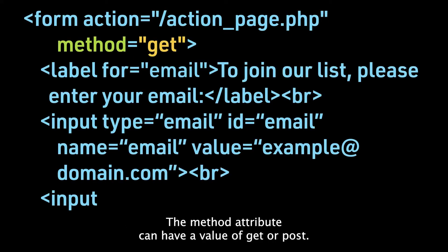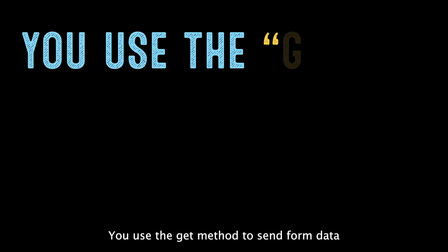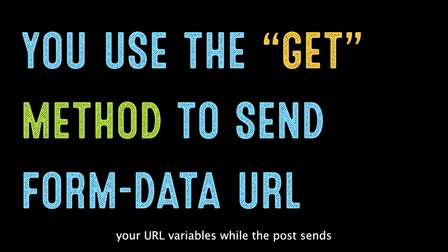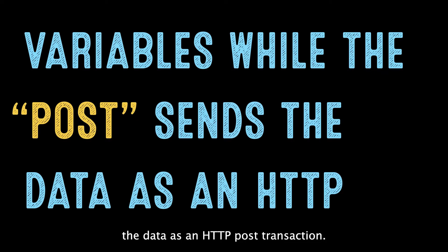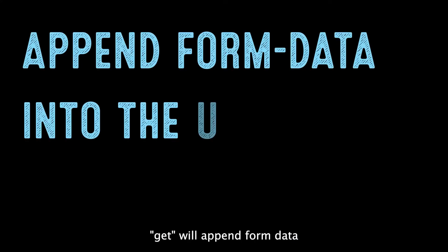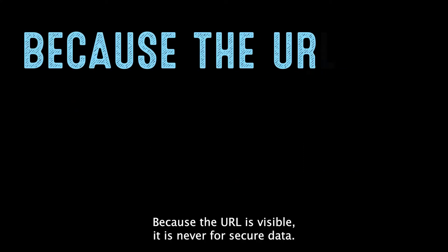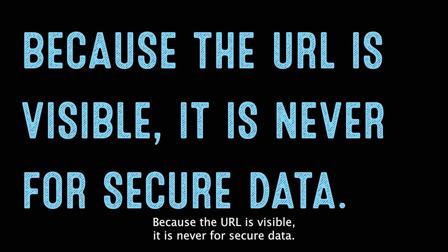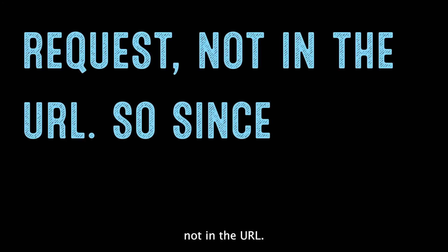The method attribute can have a value of get or post. You use the get method to send form data as URL variables, while post sends the data as an HTTP post transaction. Get will append form data into the URL as name and value pairs. Because the URL is visible, it is never used for secure data. Post will append the form data inside the body of the HTTP request, not in the URL.